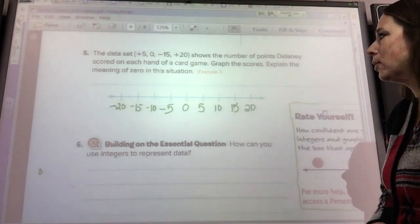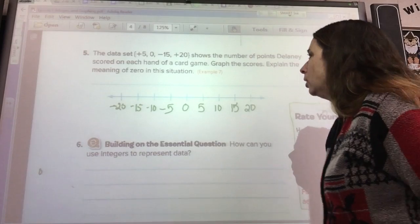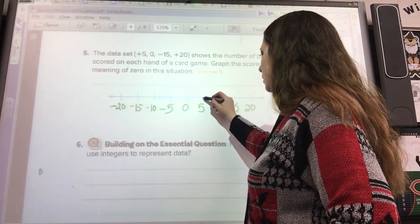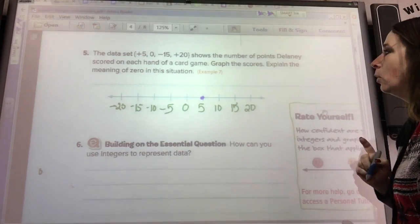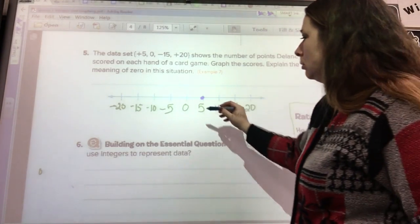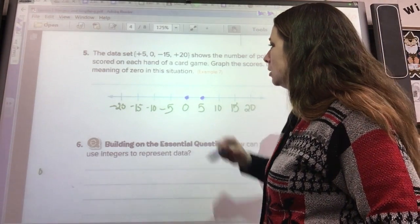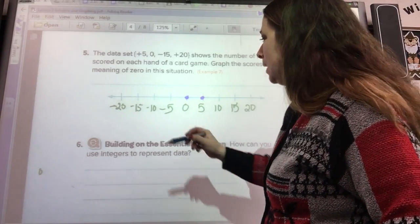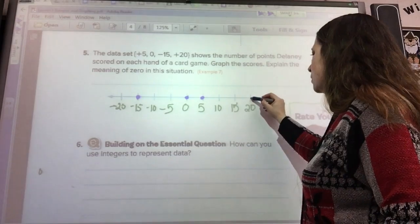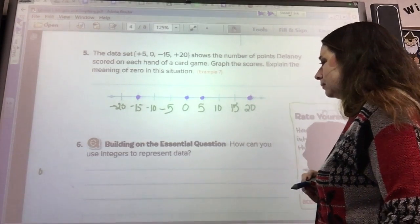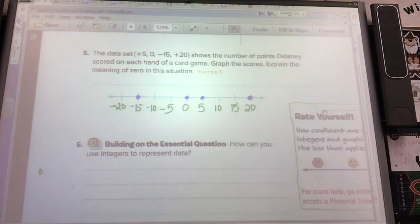Let's see if we can plot all those points. Change my color here. We've got plus five, right there. We've got a zero, right there. Negative fifteen, way down there. And positive twenty is way up there and they all fit.